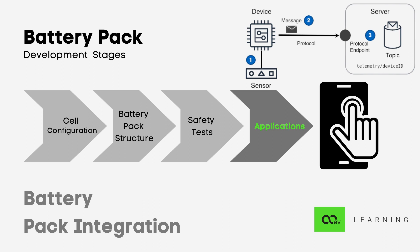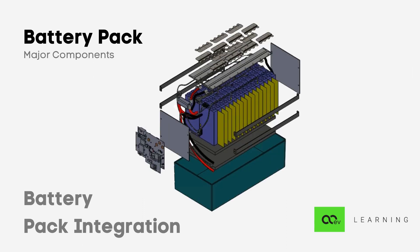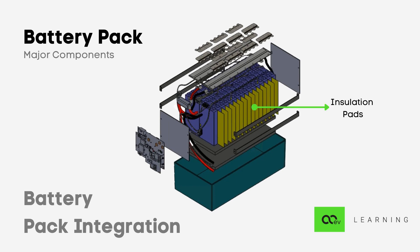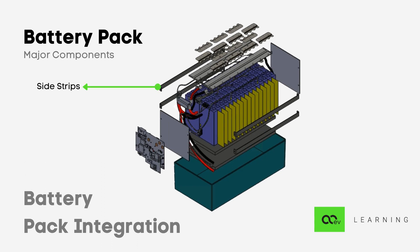Now let's have a closer look at the different components of the battery pack. First are the battery cells, where we start the battery pack development. In this picture you can see the prismatic cells. Then we have insulation pads, which keep all the cells as well as structures insulated from each other. Then we have the base plate, which gives the mechanical form and structure to the battery pack. Then we have the side strips, which tightly hold the side plates. Then we have the end plates.